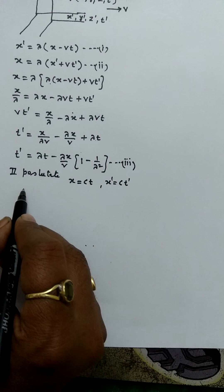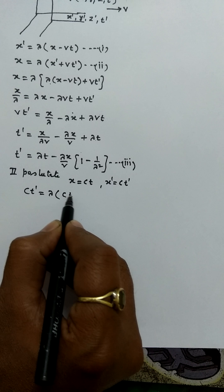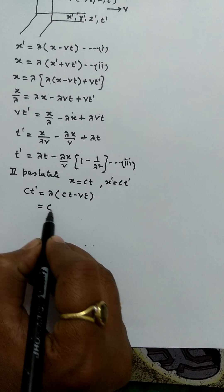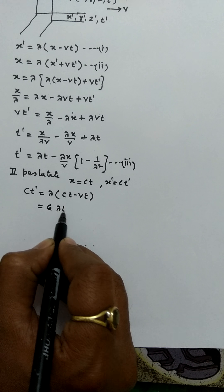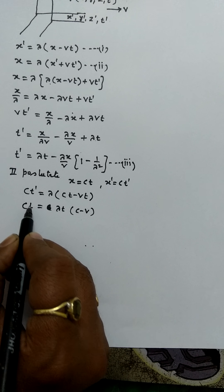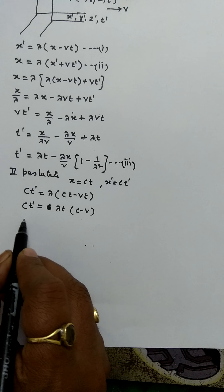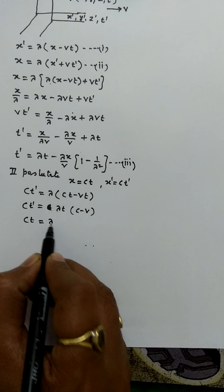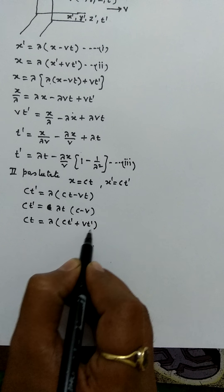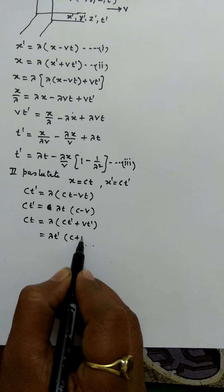Equation 1 becomes: ct dash equals lambda times (ct minus vt), and taking t common: ct dash equals lambda t times (c minus v). Putting the value into equation 2: ct equals lambda times (ct dash plus vt dash), taking t dash common: ct equals lambda t dash times (c plus v).